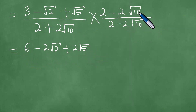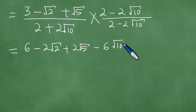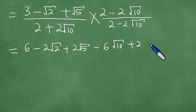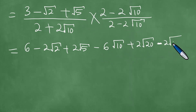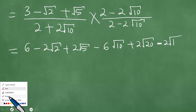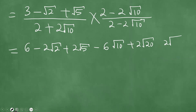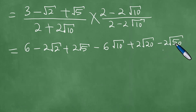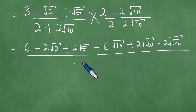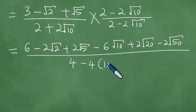Multiply through now by negative 2 times the square root of 10: negative 2 times the square root of 10 times 3 is minus 6 times the square root of 10. Multiplying these two would give us plus 2 times the square root of 20. Multiplying this here would give us minus 2 times the square root of 50. And now you proceed to do division: the denominator is 4 minus 4 times the square root of 10, giving 4 minus 40.